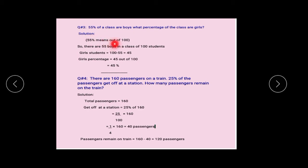55% out of 100 are boys from the class. We have 55 boys in a class of 100 students. So girls students, we have to subtract. So 100 minus 55 is equal to 45.